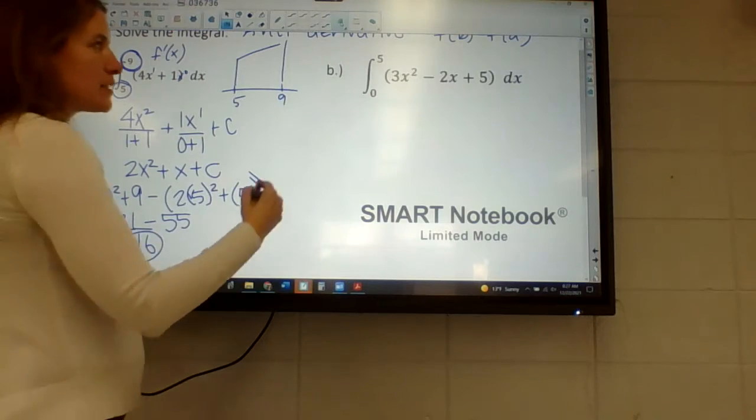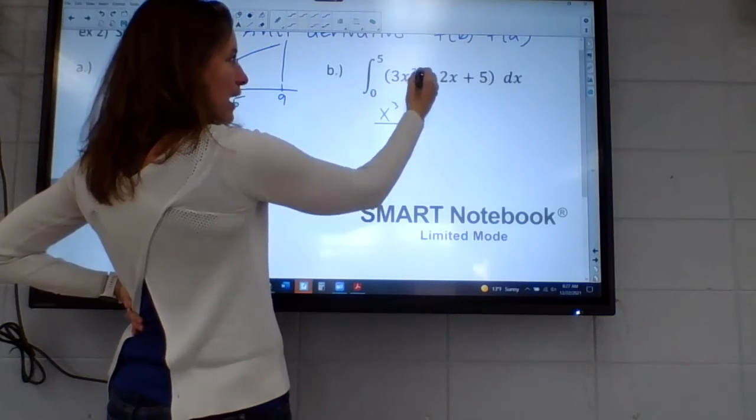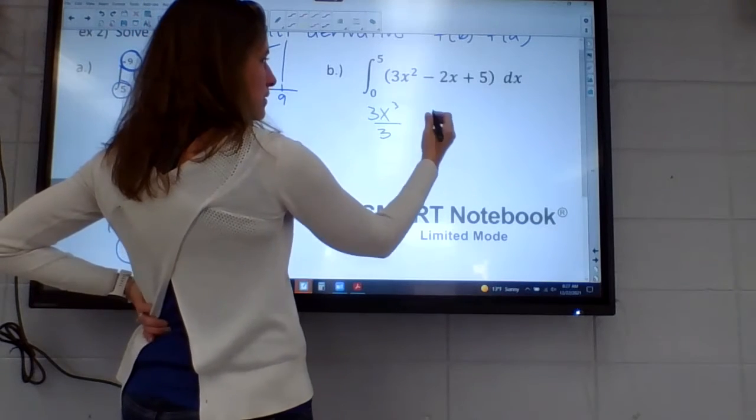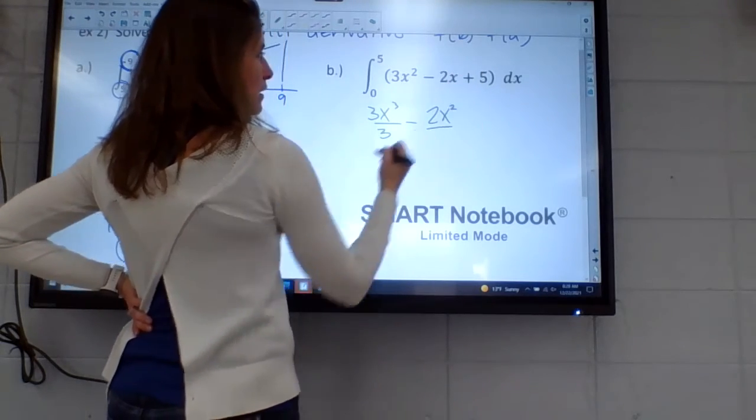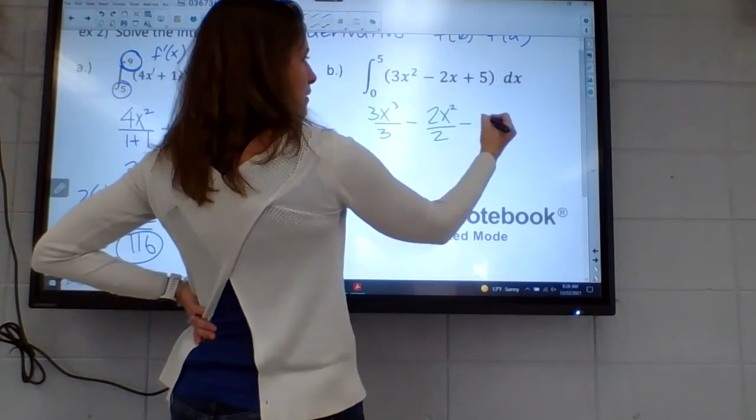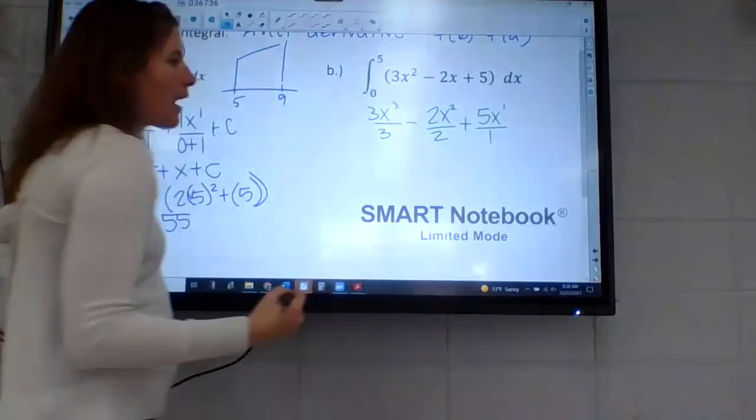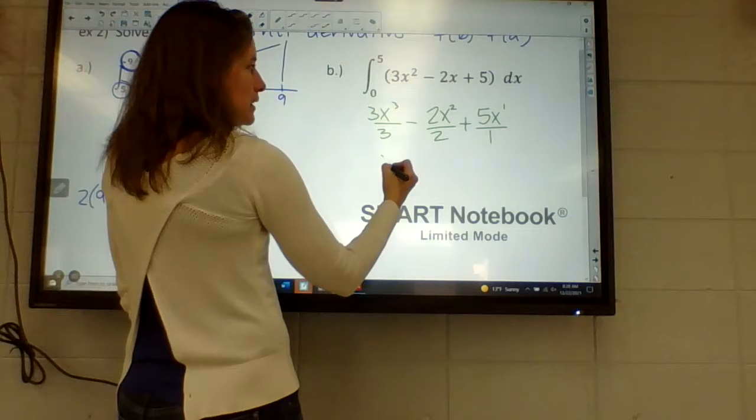But again, finding that antiderivative: raising the power by one and then dividing by the power plus one. So that cancels. Raising the power by one and dividing by that power. Raising the power by one, dividing by that. And then again the plus C. But these cancel nicely in this one.